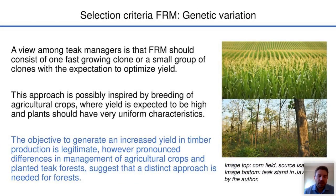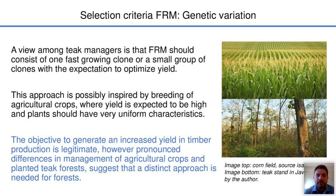A view that is common among teak managers is that reproductive material should consist of one fast-growing clone or a small group of clones, with the expectation to optimize timber yield. This approach seems to be inspired by breeding of agricultural crops, where yield is expected to be high and plants should have very uniform characteristics. The objective to generate increased yield in timber production is legitimate; however, pronounced differences in management of agricultural crops and planted teak forest suggest that a distinct approach is needed for teak.